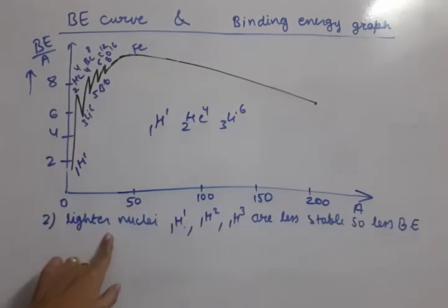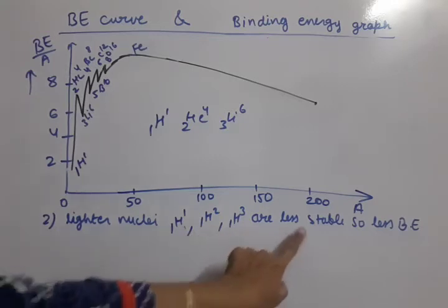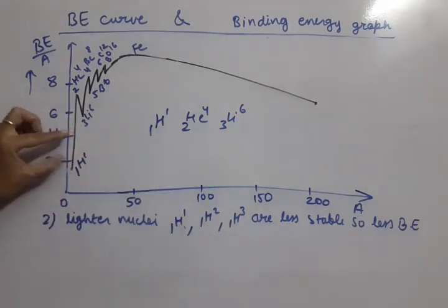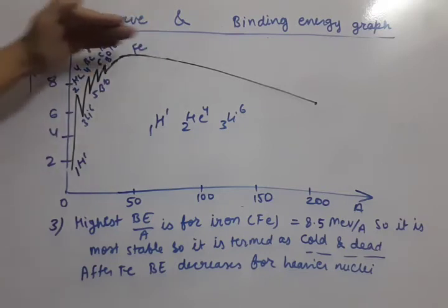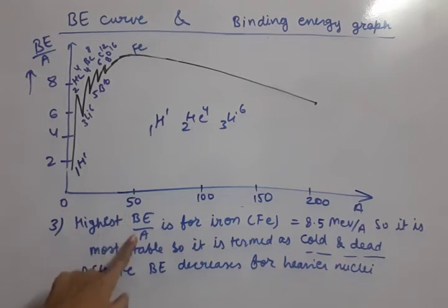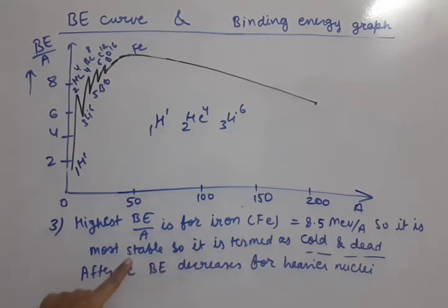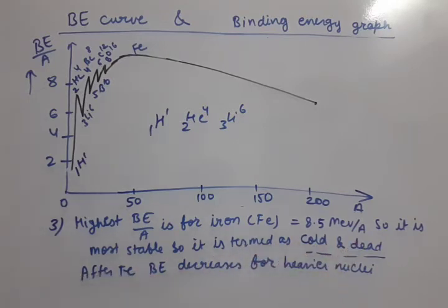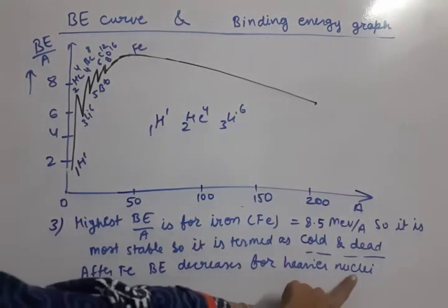All lighter nuclei — such as the isotopes of hydrogen 1H1, 1H2, and 1H3 — are less stable, so their binding energy is very low, and they appear on the left side of the graph. The maximum binding energy per nucleon is for iron (Fe), at about 8.5 MeV per nucleon, making it the most stable nucleus. That's why iron is also called 'cold and dead' — being most stable, it does not take part in any reaction. After iron, the binding energy decreases for heavier nuclei.